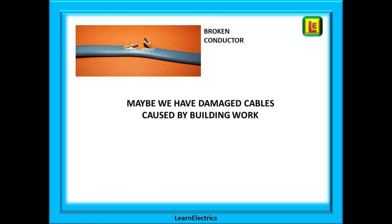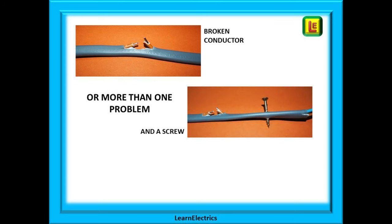Maybe we have damaged cables behind the wall caused by building work. Perhaps the cables have been cut when pulled through trunking systems. There are many ways that a cable can suffer damage and we may even have a cable that is damaged in two or more places. How are we going to find any of these problems before we energize the cables? It is infinitely better to find the problem during dead testing than to wait for it to go bang during live testing.